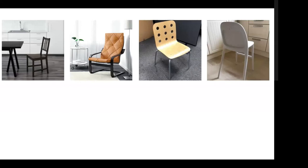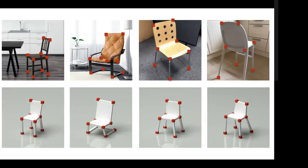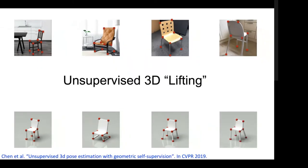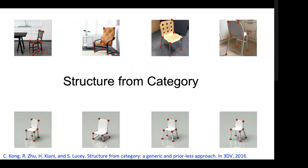Let's set up the problem more formally. We have our 2D landmarks from a bunch of images — perhaps millions — all from the same object category: chair, car, table. We want to lift out the 3D structure using only 2D labels, but we have lots and lots of them from that same object category. Some people call this unsupervised 3D lifting — a term from Jim Rehg's group's CVPR 2019 paper. Another term we like to use is structure from categories.